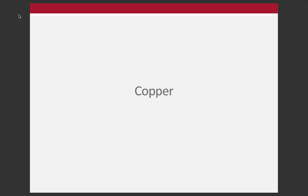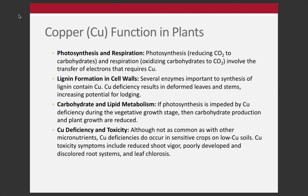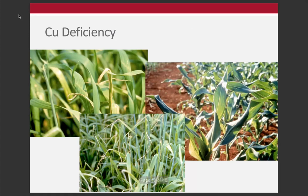Our next element is copper. Copper primarily functions in facilitating photosynthesis and respiration with transfer of electrons, but also serves with ligand formation, cell walls, and carbohydrate and lipid metabolism — so it has a number of different functions. For copper deficiency, primarily think of this in the context of grasses, small grains in particular. It has this kind of curled tips that you can see pictured here — a more distinguishing feature of the visual deficiency symptoms of copper.